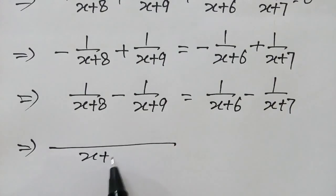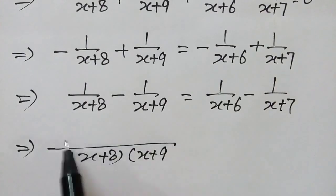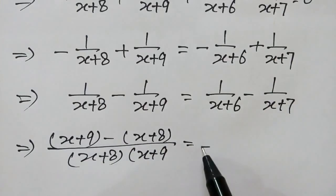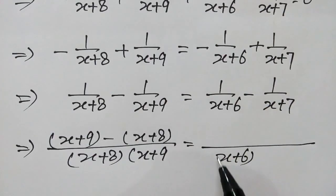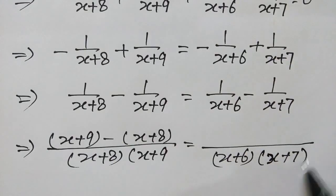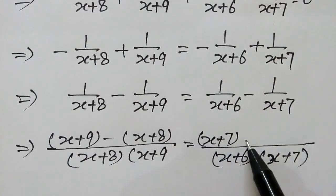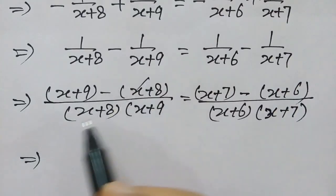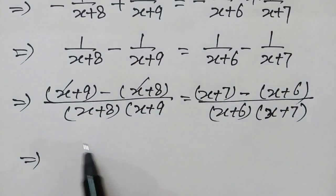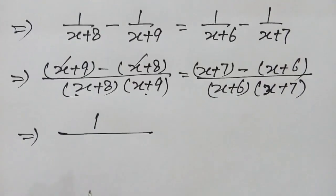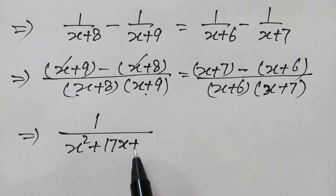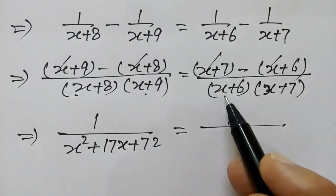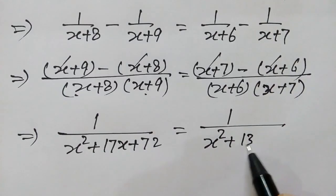Now, taking (x+8)(x+9) as the common denominator on the left, we get (x+9) minus (x+8) over (x+8)(x+9). And on the right, (x+6)(x+7) as the common denominator gives (x+7) minus (x+6) over (x+6)(x+7). So we get 1 over (x²+17x+72) is equal to 1 over (x²+13x+42).